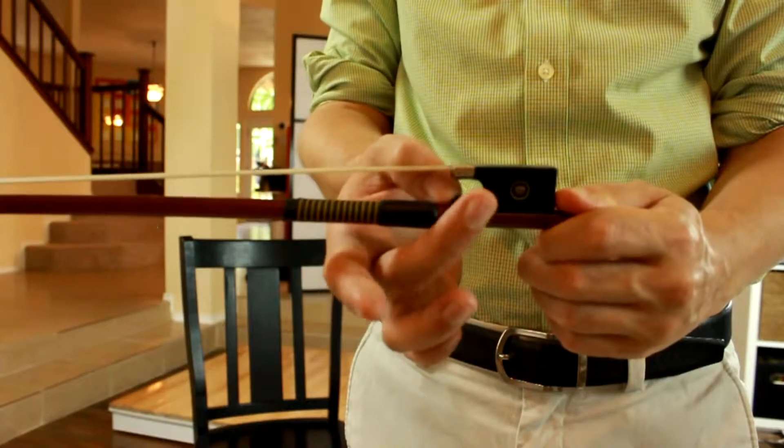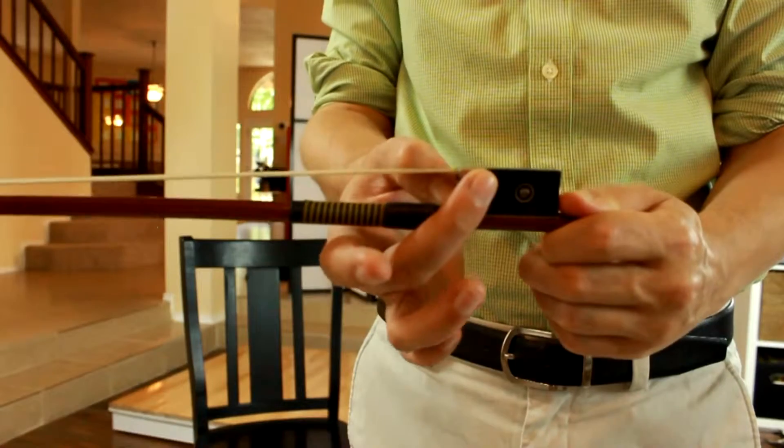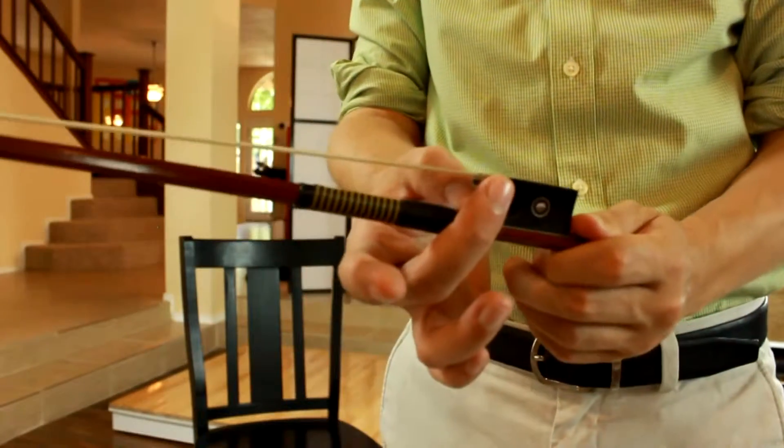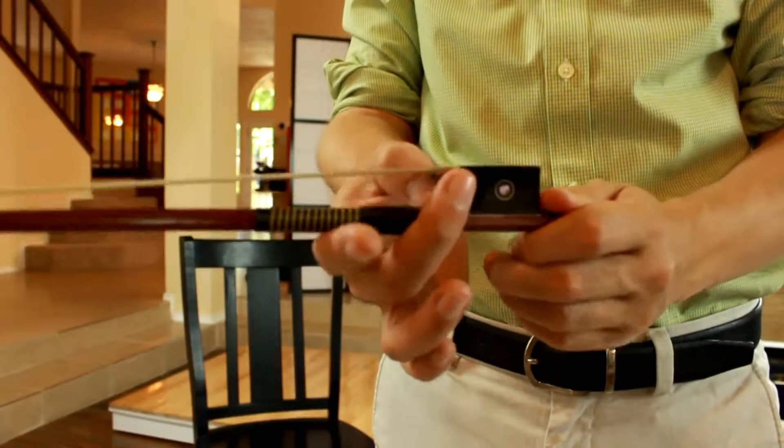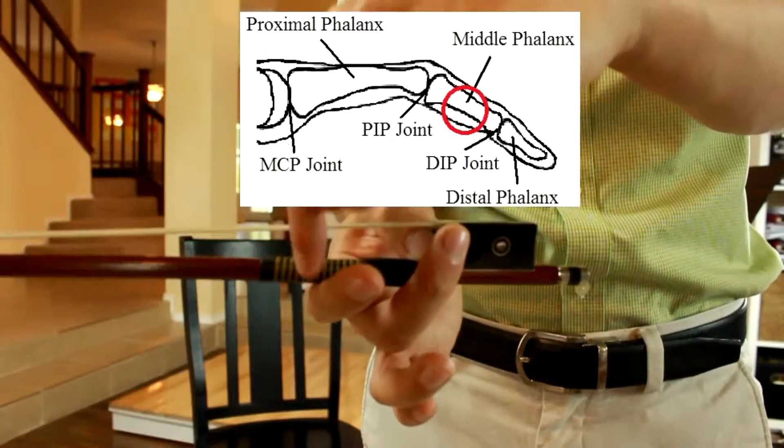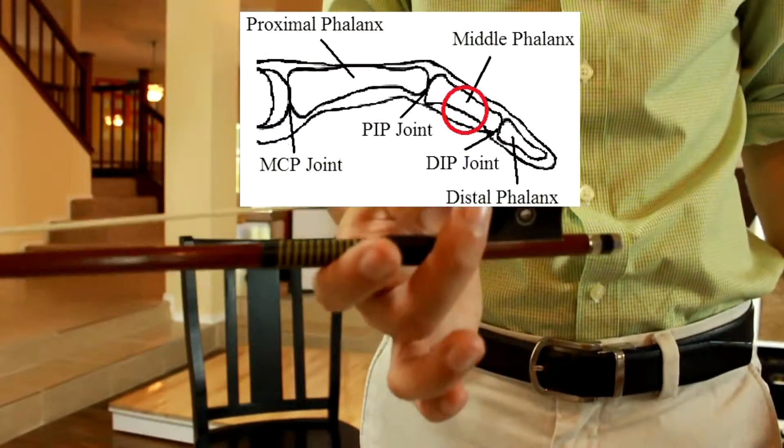I'm going to wrap around my second finger and find that all-important ring that we had before. I'll let my bow just sit gently on my first finger between the first and second joints in the first finger.